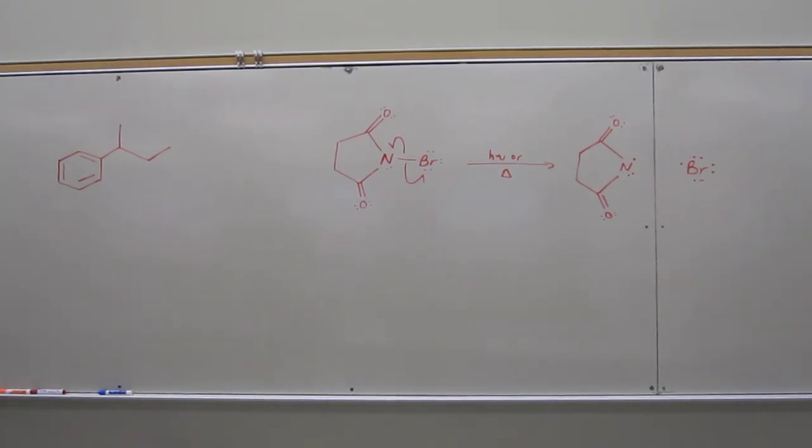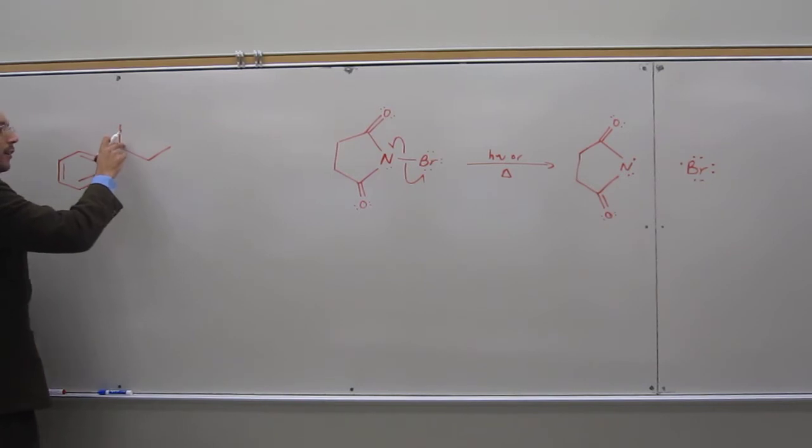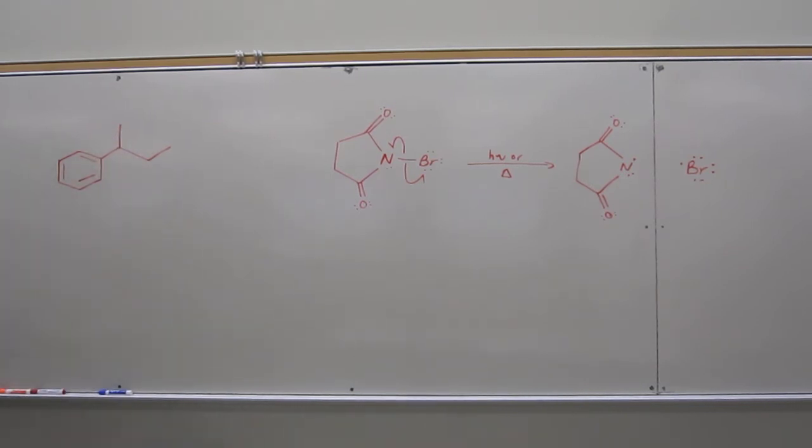So what we're going to recall, if you recall from our discussion last time, is that benzylic hydrogens or benzylic protons are particularly labile due to the fact that there's a lot of resonance structures that you can make if you make a radical at that position.